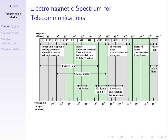This spectrum diagram shows the range of frequencies commonly used for communication systems. The labeled bands at the top - ELF, VF, VLF, LF, MF, HF, VHF, UHF - are frequency band designations. VHF and UHF may be familiar from old TVs which had separate VHF and UHF channel settings.